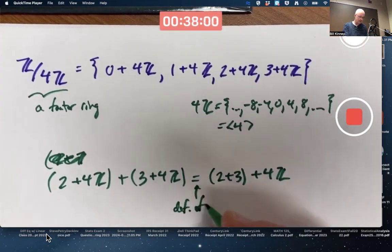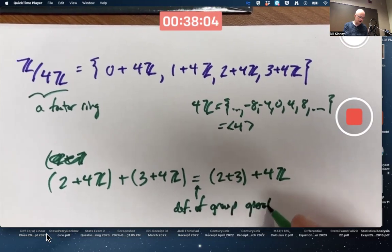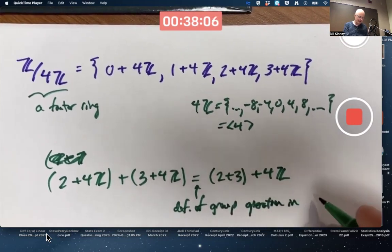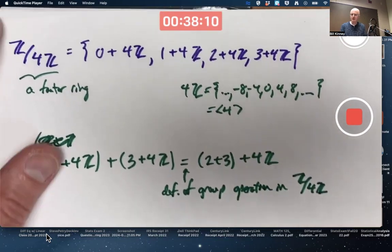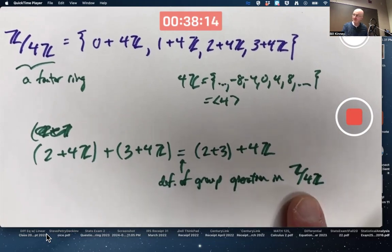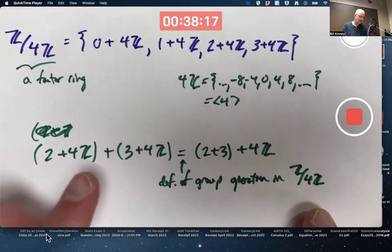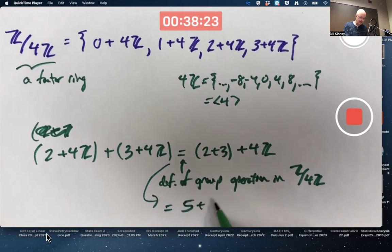The definition of the group operation in the factor ring, Z mod 4Z. You could think of it as the group operation in the factor group. Add cosets by adding representatives. The next step is just, well, the fact that 2 plus 3 equals 5.